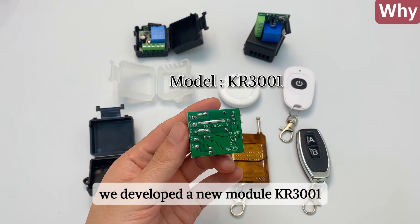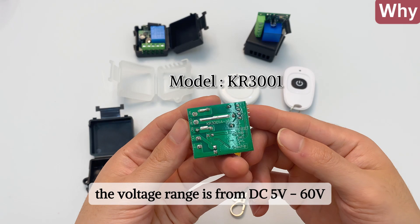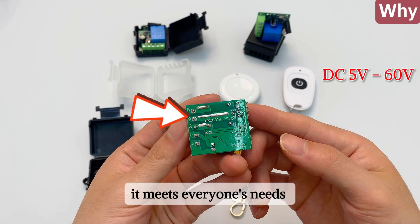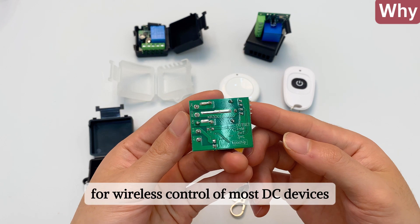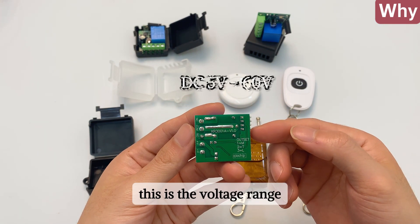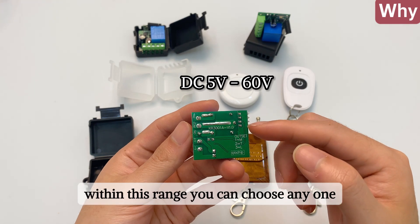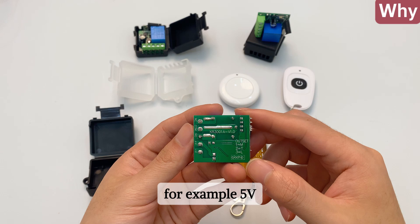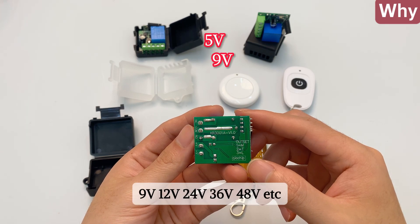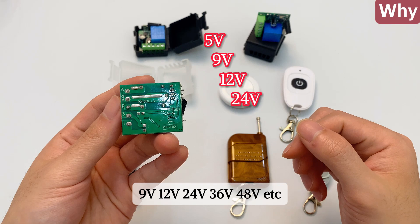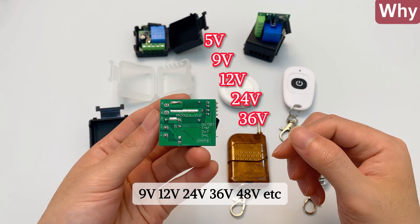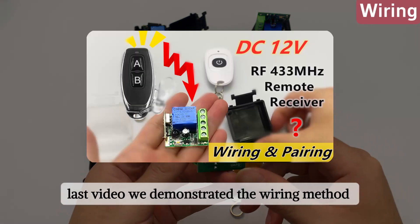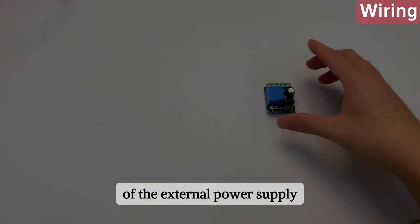The voltage range is from DC 5 voltage to 60 voltage. It meets everyone's needs for wireless control of most DC devices. This is the voltage range. Within this range you can choose any one, for example 5 voltage, 9 voltage, 12 voltage, 24 voltage, 36 voltage, 48 voltage, etc.